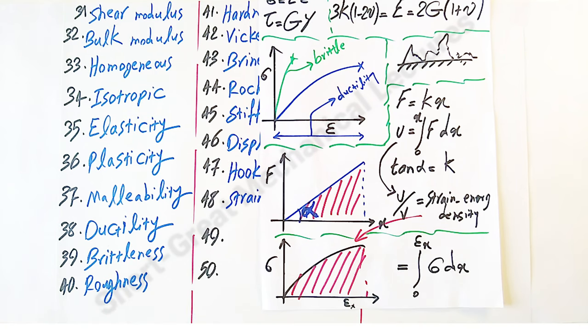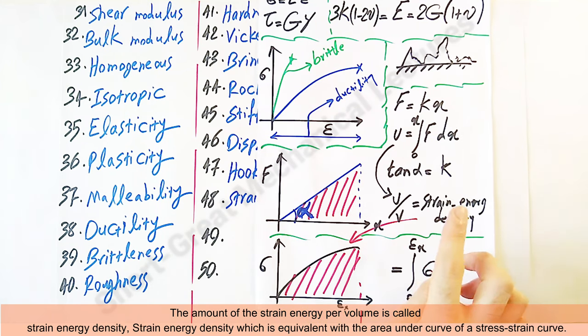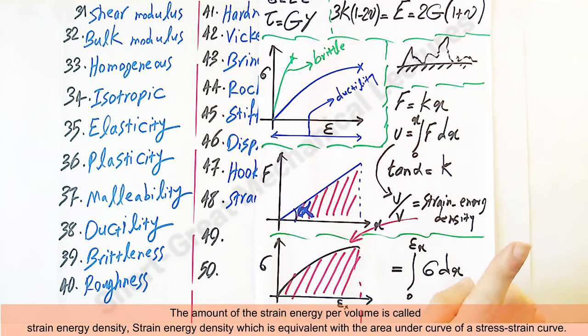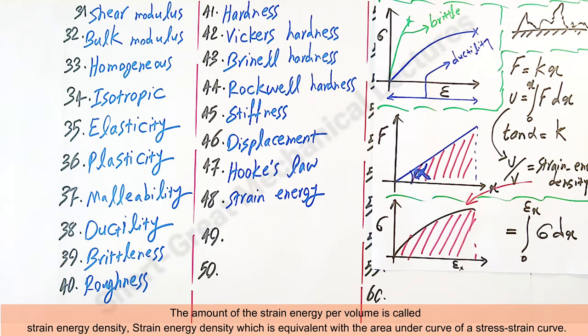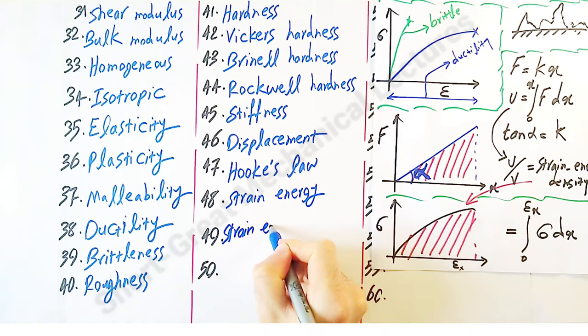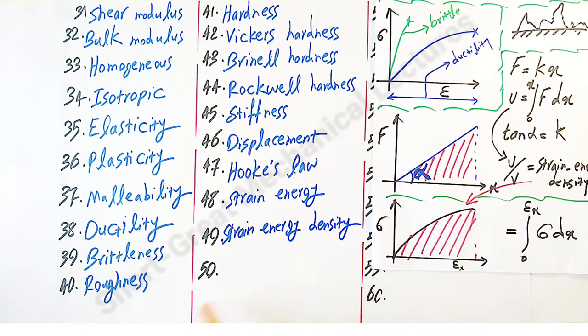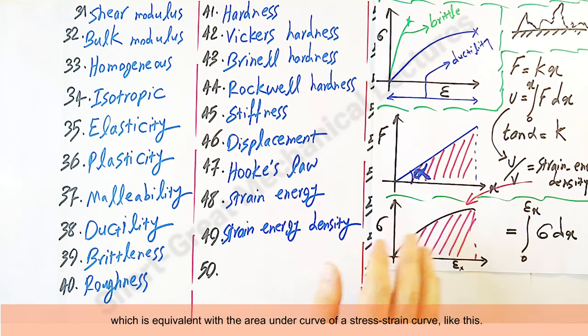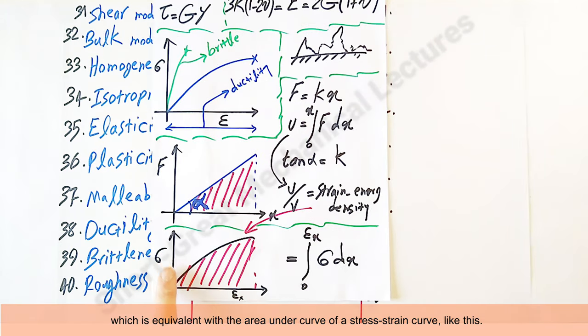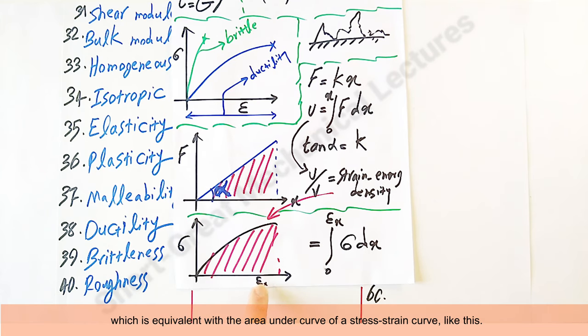The amount of the strain energy per volume is called strain energy density, which is equivalent with the area under the curve of a stress-strain curve, like this.